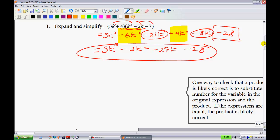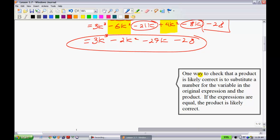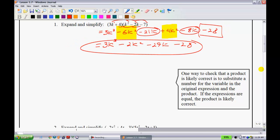So the next thing that they have right here is I've put forward kind of a way that you guys can check. It says one way to check that a product is likely correct is to substitute a number for the variable in the original expression and in the product. If the expressions are equal then we can probably say it's correct. So if I zoom out here a little bit.